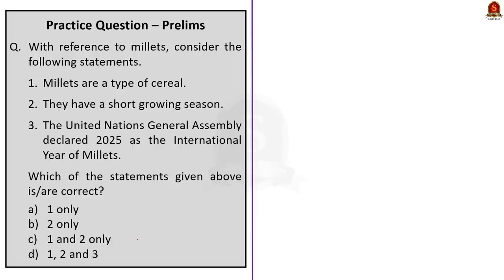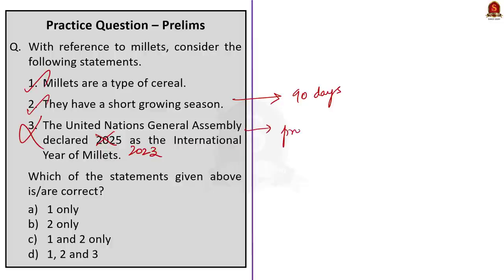Come to the next question — with reference to millets, consider the following statements. First: millets are a type of cereal. Grains are classified into cereals, pulses and oilseeds, and millets come under the category of cereals. So the first statement is correct. Second: they have a short growing season. This is also correct because many millets are cultivated within 90 days of their sowing. Third: the United Nations General Assembly declared 2025 as the International Year of Millets. This statement is incorrect — it should be 2023. The proposal to declare 2023 as the International Year of Millets was put forward by India, and it was declared by the UNGA in its 75th session held in 2021. FAO, the Food and Agriculture Organization, is the lead agency for celebrating this year. The question asks you to choose the correct statements, so the correct answer is option C, 1 and 2 only.